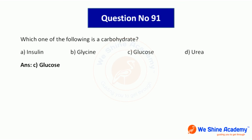Question number 91: Which of the following is a carbohydrate? Options: glucose, insulin, glycine, urea. Insulin, glycine, and urea are not carbohydrates. Carbohydrate is glucose. Answer: glucose.